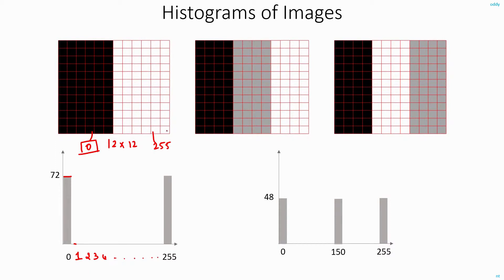When I come to 255, again here 72 pixels that are having this intensity value. So again I plot the same thing on the graph. Now this gives me the histogram for this image.